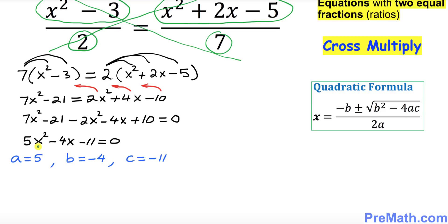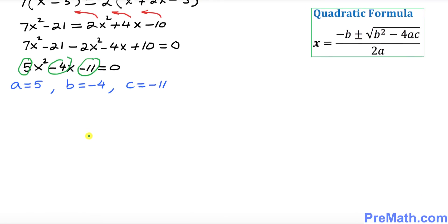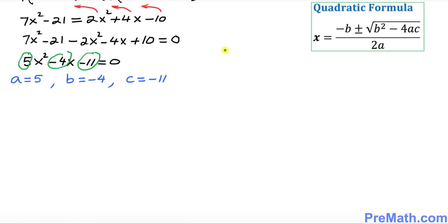Now we solve this quadratic equation using the quadratic formula, where a is positive 5, b is negative 4, and c is negative 11. We'll solve for x by substituting these a, b, c values into the formula.